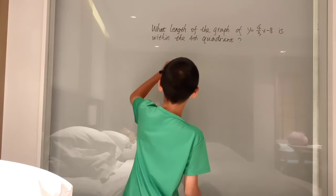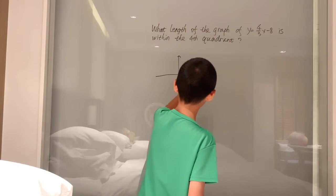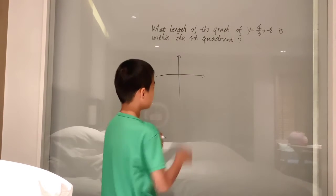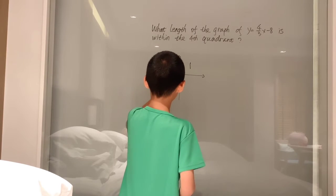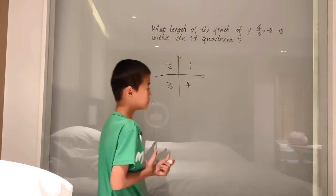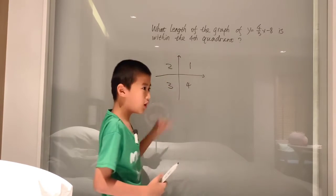Quadrants are basically on your coordinate plane, just a regular old coordinate plane. Quadrants are just sections of the coordinate plane. There are four sections on the coordinate plane, right? One, two, three, and fourth quadrant.